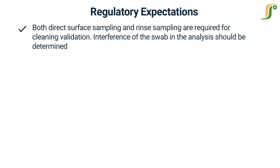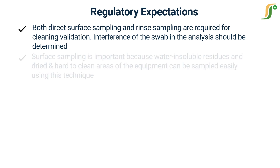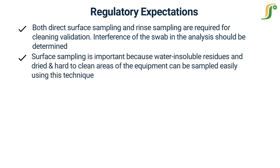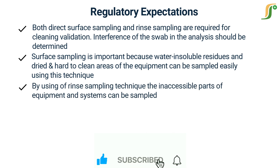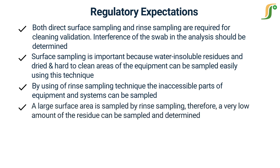Both direct surface sampling and rinse sampling are required for cleaning validation. Interference of the swab in the analysis should be determined. Surface sampling is important because water-insoluble residues and dried, hard-to-clean areas of the equipment can be sampled easily using this technique. Using rinse sampling, the inaccessible parts of equipment and systems can be sampled. A large surface area is covered by rinse sampling, so a very low amount of residue can be sampled and determined.